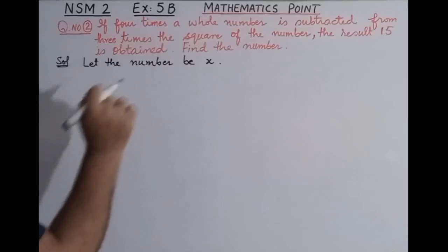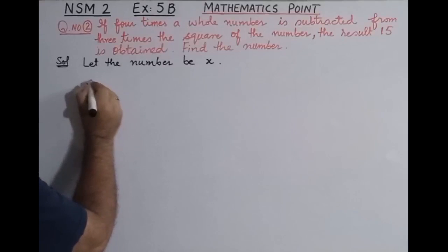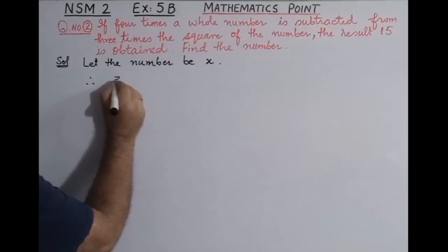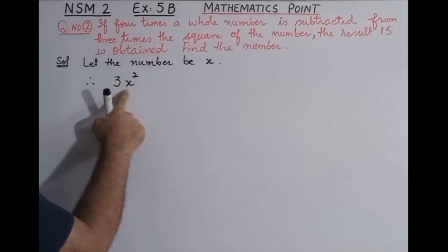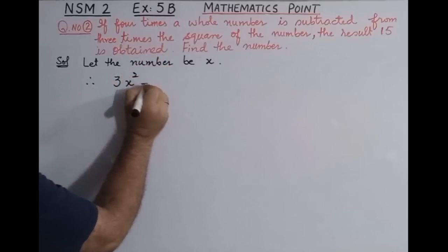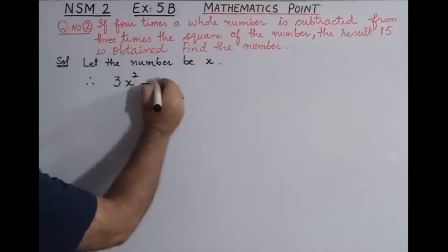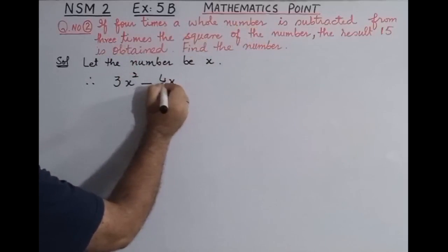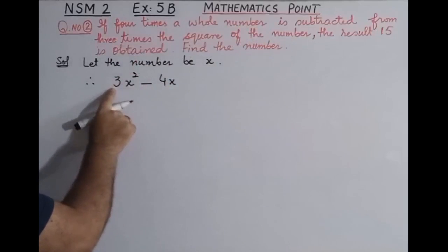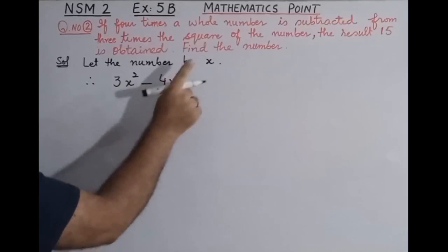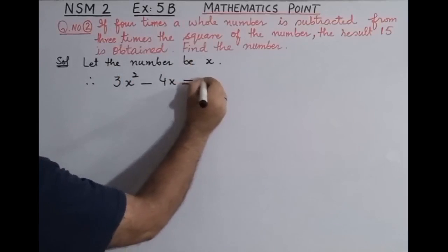...three times the square of the number, the result 15 is obtained. Therefore: three times the square of the number, minus four times the whole number — that is 3x² minus 4x — equals 15.